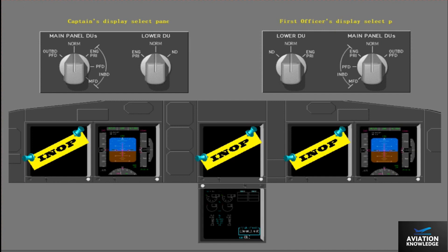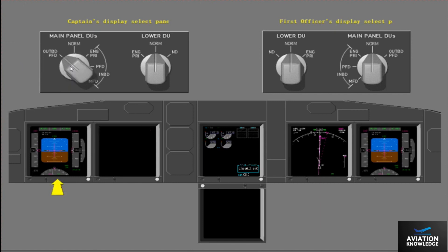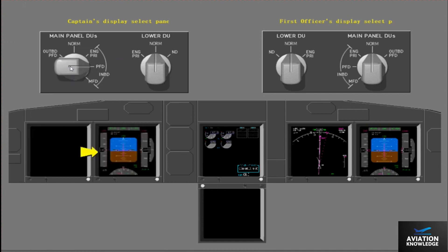Let's put the display units back to normal and manually control the displays with the selectors. Select outboard PFD with the captain's main panel DU's selector. The outboard DU will continue to show the PFD display, but the inboard DU will blank. Now select inboard PFD with the captain's selector. The inboard DU shows the primary flight display and the outboard DU is blank. To display the navigation display for the captain, select ND on the captain's lower DU panel. The navigation display shows on the lower DU.